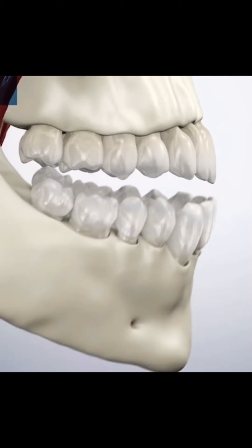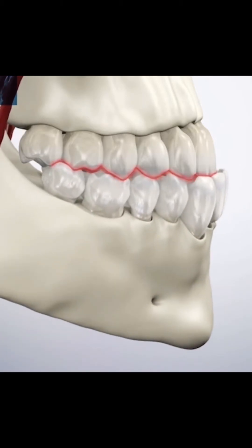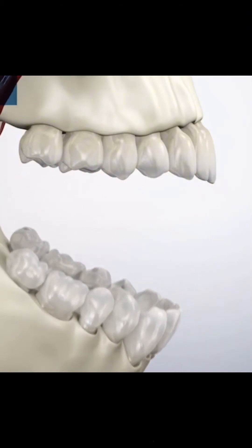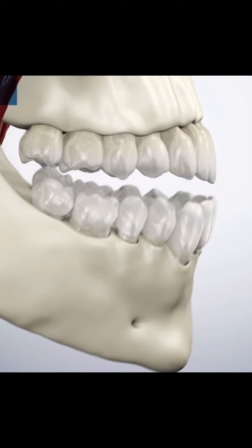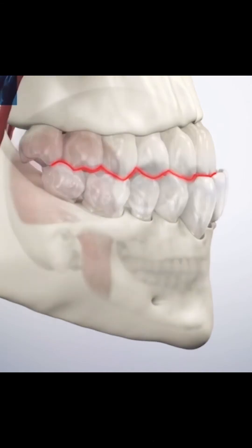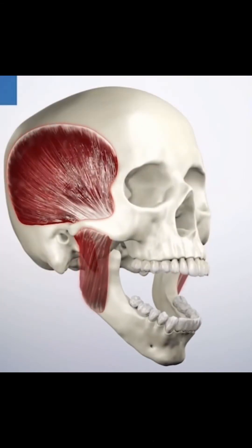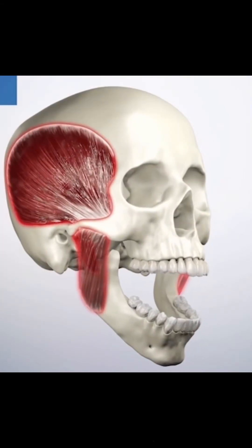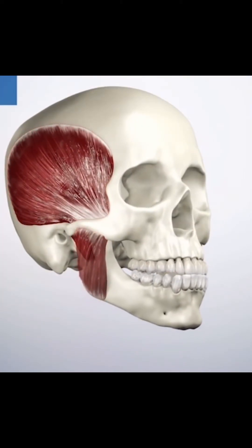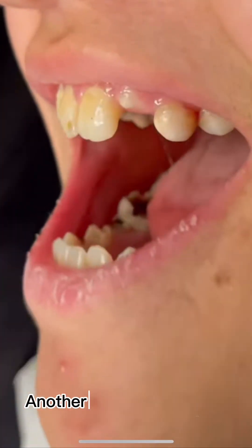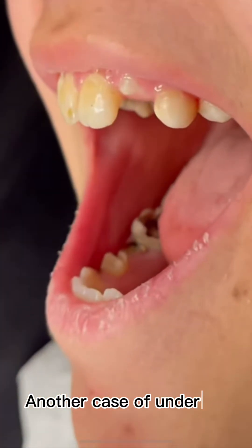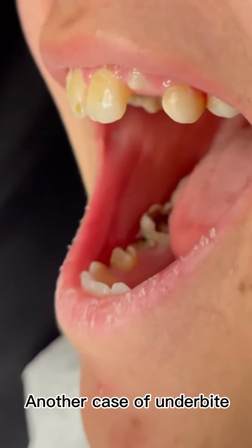Here we can take a close look at the musculoskeletal level to see the movements of both the lower and upper jaw and the position of the teeth. Let's view another case of underbite.